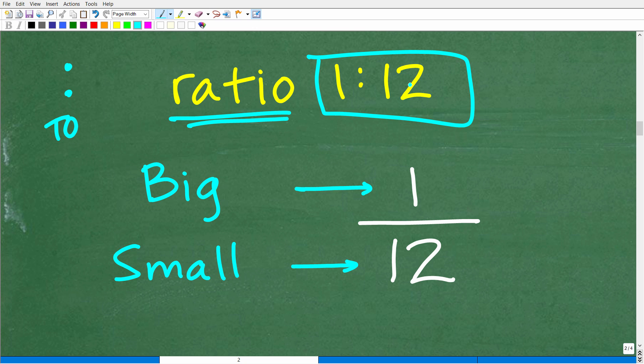What are we comparing? We have a fraction and we're comparing how many times the big gear will turn to the small gear.